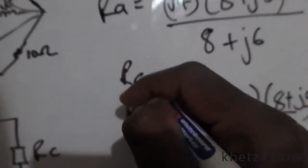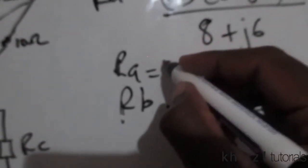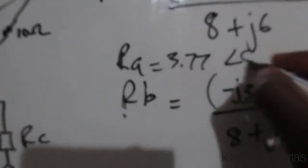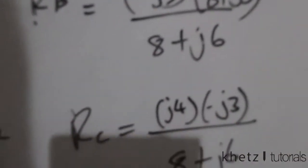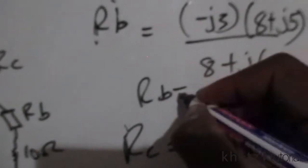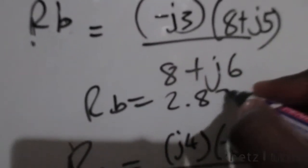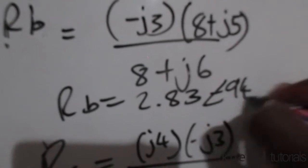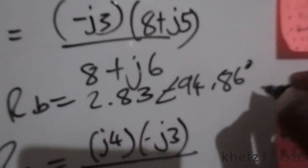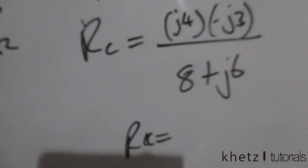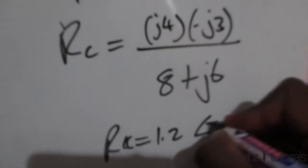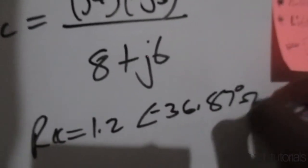The results should be: RA equals 3.77 at an angle of 85.14 degrees, RB equals 2.83 at an angle of negative 94.86 degrees, and RC equals 1.2 at an angle of negative 36.87 degrees.